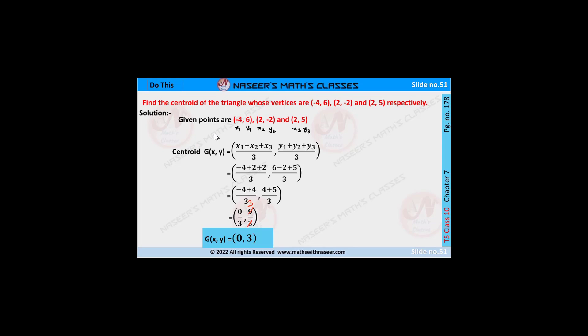We already know that if x1 comma y1, and x2 comma y2, and x3 comma y3 are the vertices of the triangle, then the centroid G(x, y) is written as x1 plus x2 plus x3 by 3, comma y1 plus y2 plus y3 by 3.